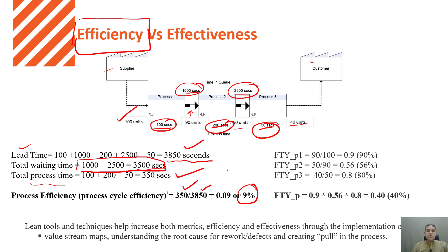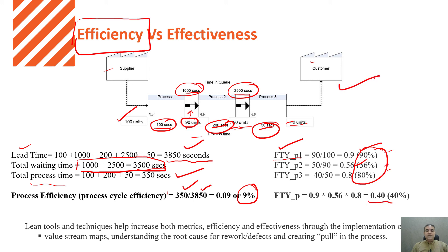To calculate effectiveness, we need to calculate the first pass yield. In first pass yield, we do not consider rework or scrap units — only units that pass at the first time. Process 1: 90/100. Process 2: 50/90. Process 3: 40/50. Multiplying these percentages gives 40%. This means the process is only able to produce 40% conforming units at the first go — the remaining 60% are scrap or rework units.